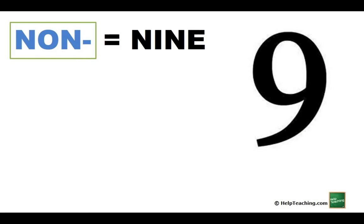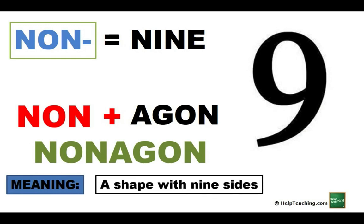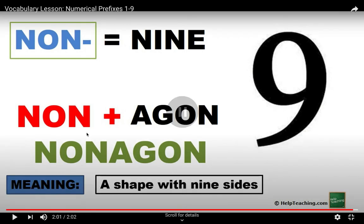Non means nine. Nonagon means a shape with nine sides. And that's the end of this video.